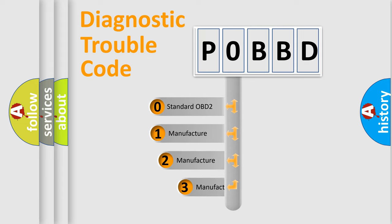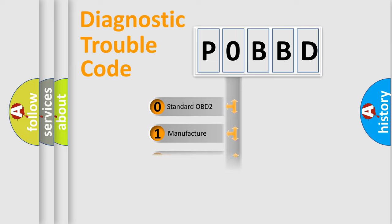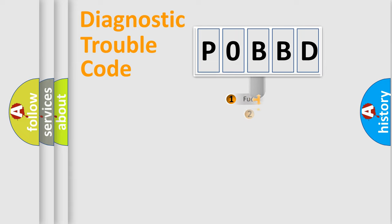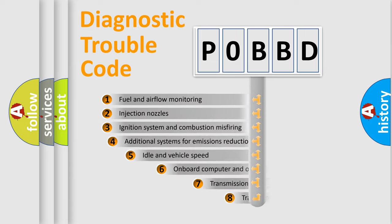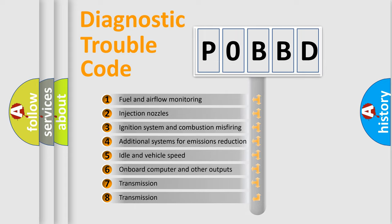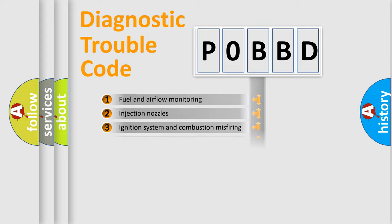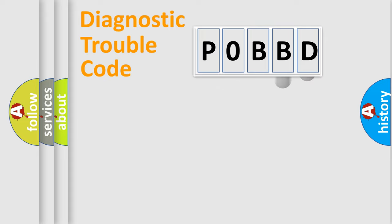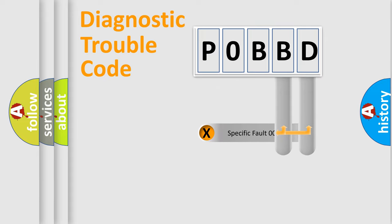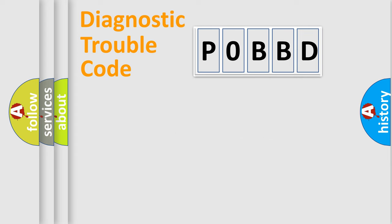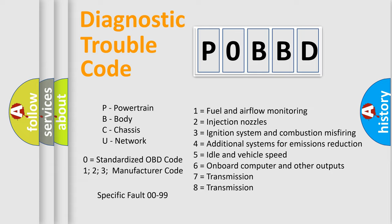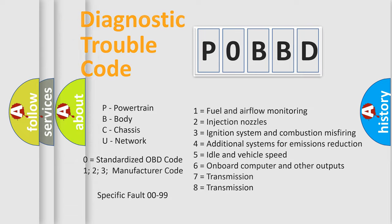If the second character is expressed as zero, it is a standardized error. In the case of numbers 1, 2, or 3, it is a more specific expression of a car-specific error. The third character specifies a subset of errors. This distribution is valid only for the standardized DTC code, and only the last two characters define the specific fault of the group. Such a division is valid only if the second character code is expressed by the number zero.